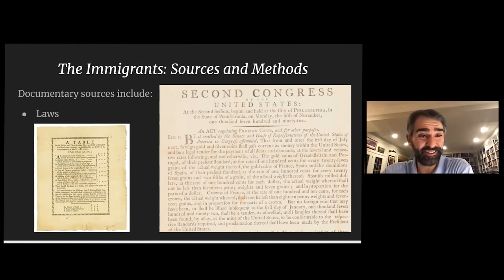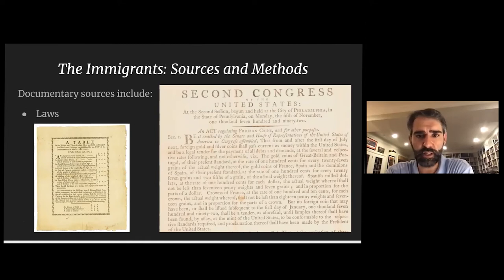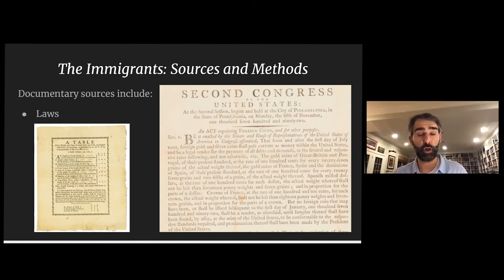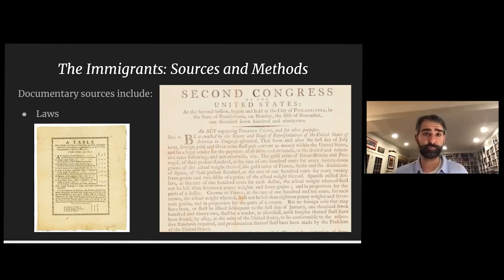Now for documentary evidence. Laws are a great form of evidence: the Second Congress in 1792 passed an act to regulate foreign coins and specifically named the gold coins of France, Spain, and the dominions of Spain. If they're passing a law about it, those coins were probably here. Laws also address counterfeiting — if New York is forbidding the counterfeiting of lion dollars, lion dollars were probably there. Laws generally treat problems that actually exist.